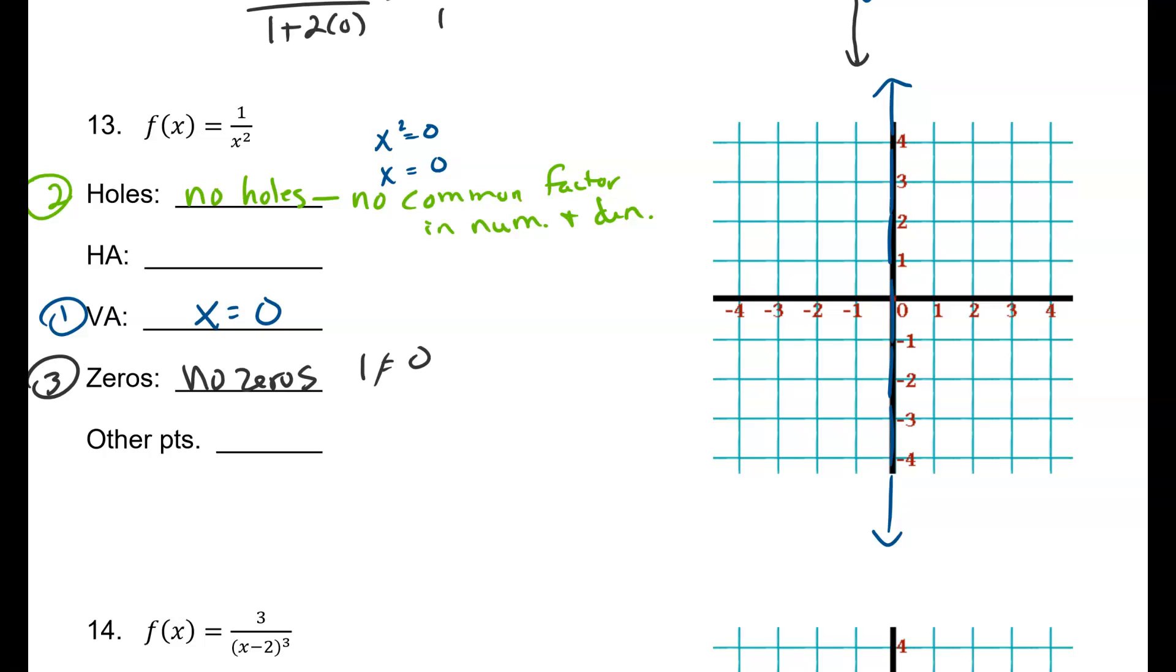Guys, this degree on the top, if that's 1, is really x to the 0. So we know the degree of the numerator is less than the degree of the denominator.